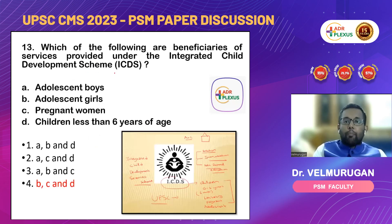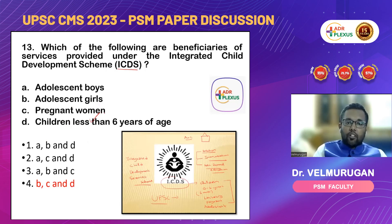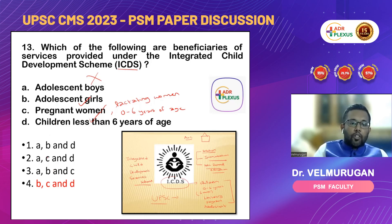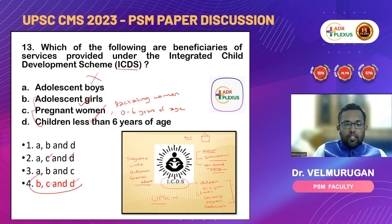Next question: who are the beneficiaries under the ICDS — Integrated Child Development Services — scheme? As discussed in class, it includes children between 0 to 6 years of age, pregnant women, lactating women, and adolescent girls. Note that for adolescents, only girls are involved, not boys. So the answer is B, C, and D.